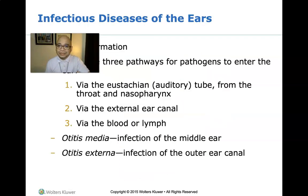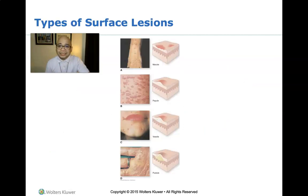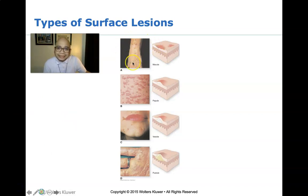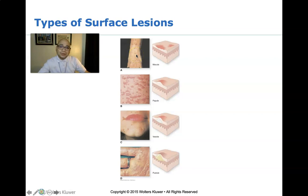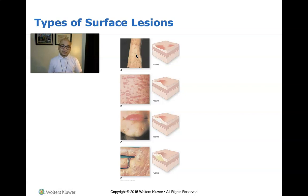These are the different layers and terms associated with skin infections. The first illustration is an example of a macule. A macule is a flat, distinct, discolored area of the skin, usually less than one centimeter in width. It does not involve any changes in the thickness or texture of the skin.